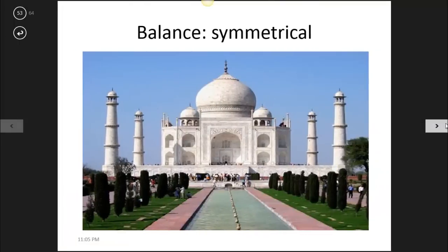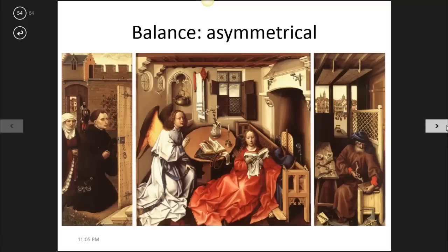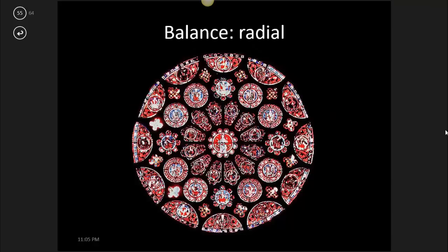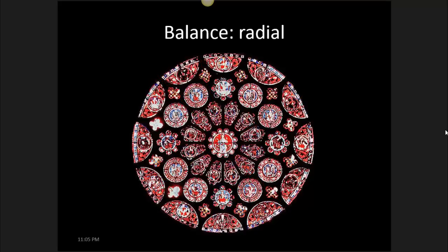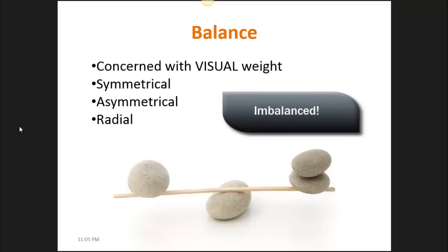We're going to look at three different types of balance. The first one is symmetrical — symmetrical pretty much means you could cut it down the middle and it would be an identical mirror image on either side, such as the Taj Mahal. Asymmetrical balance means visually it's still balanced, but it's not a mirror image — you can see that there are different scenes happening on the left and the right panels, but no one side feels heavier than the other. The third kind of balance is radial — an example is a rose window, where the balance radiates from the center out, so you could cut it anywhere as if it were a pizza and you would have a sense of mirror image. Going back to the image of the rocks, visually this image is not balanced — it is imbalanced because our eye is drawn to one side more than the other.